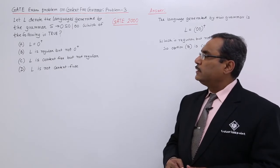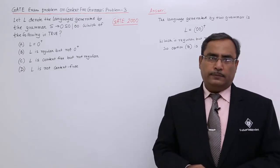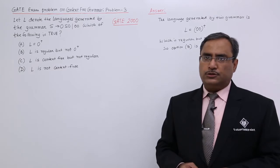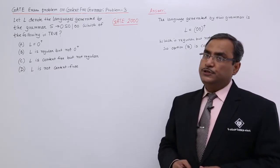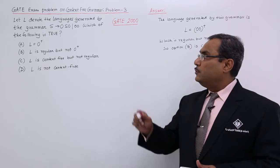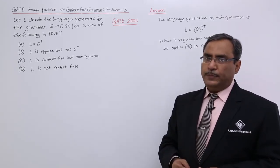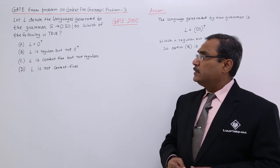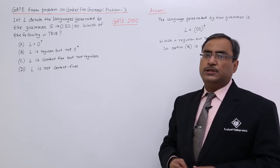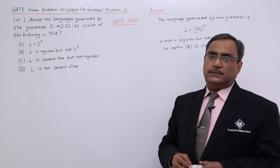Here S cannot produce epsilon. S cannot produce any null string. S can produce strings consisting of zeros, and if you look at this particular production, two productions are there. Then S can generate languages which is nothing but (00)⁺.